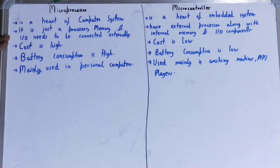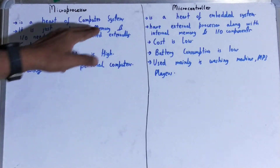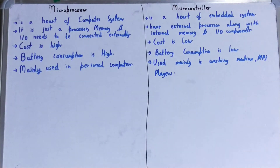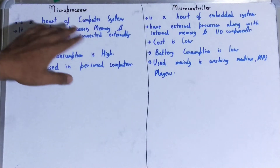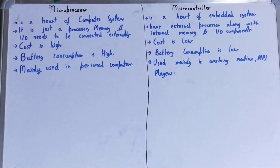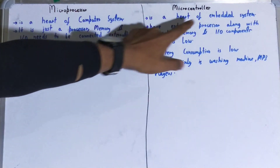The second difference is that a microprocessor is just a processor — memory and input/output need to be connected externally. If they were to attach the input/output and memory inside, the microprocessor would become very large. So generally, memory and I/O are not present inside the microprocessor — it contains only the processor.